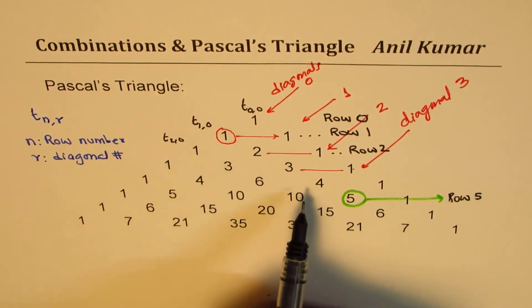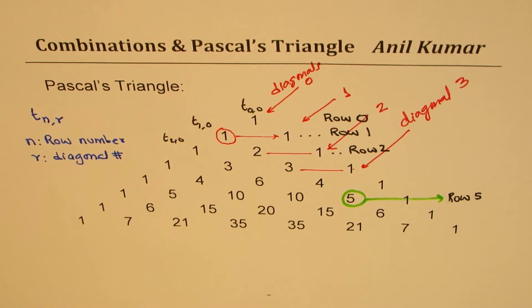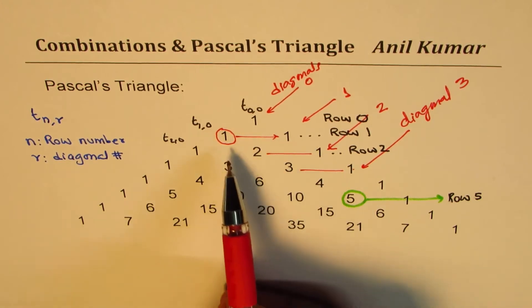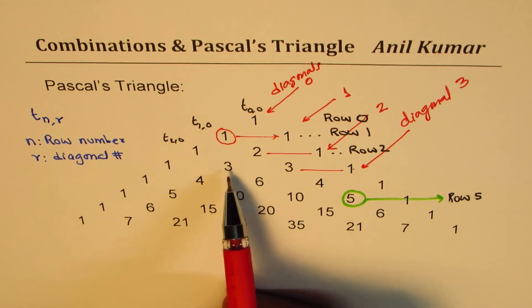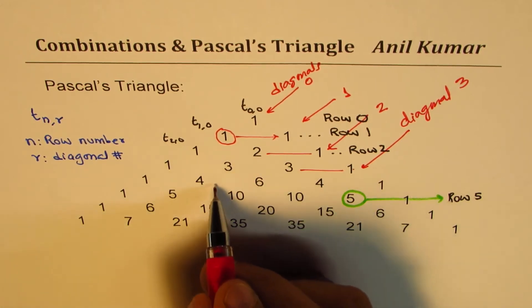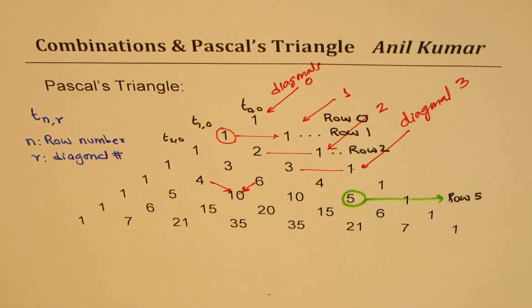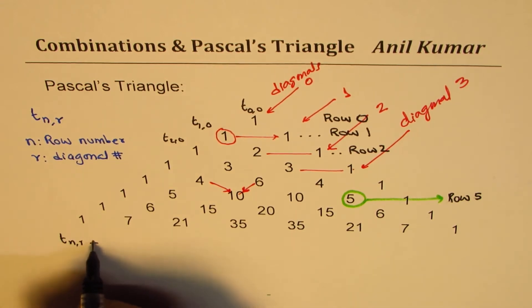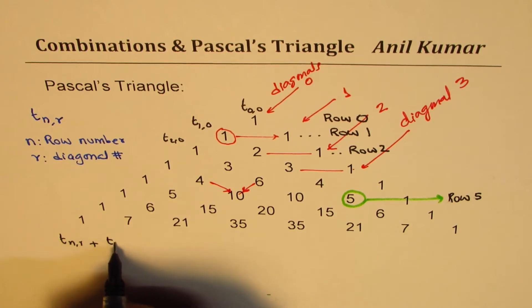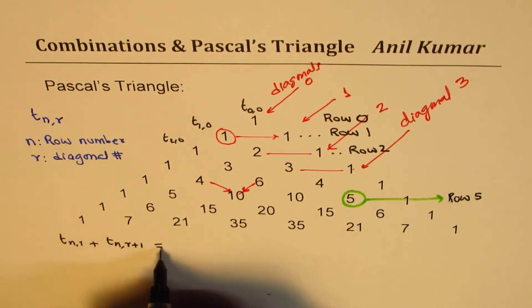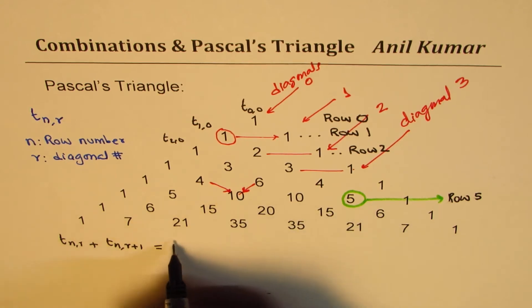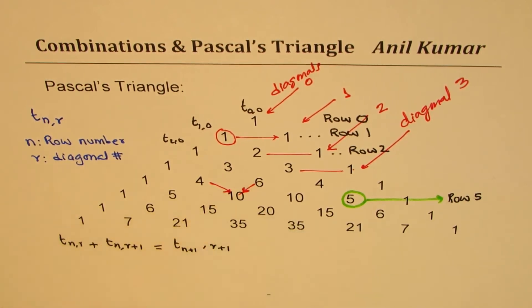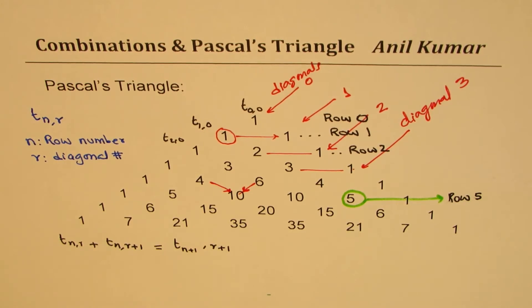Now, how do you generate the terms in this pattern? It's a simple exercise. As you go diagonally you put ones, and anything in between comes from the combination of the previous two. For example, if I add four and six I get ten. In general, the formula is: T(n,r) + T(n,r+1) = T(n+1, r+1). That is how we get the next term and build this triangle.